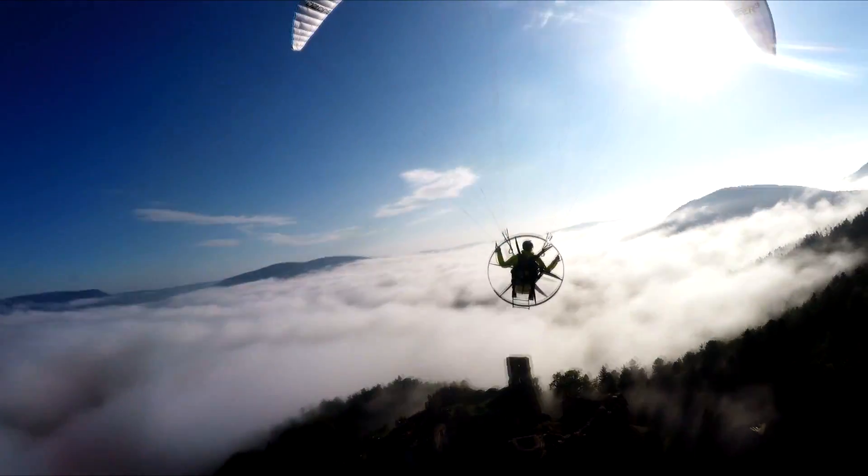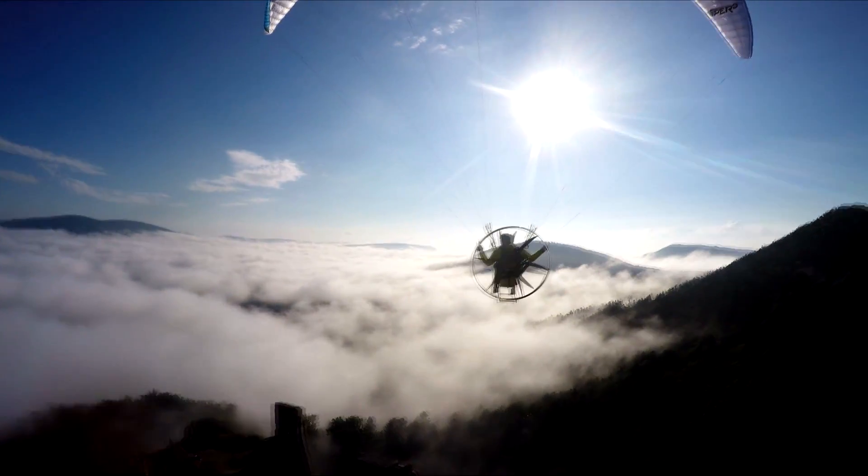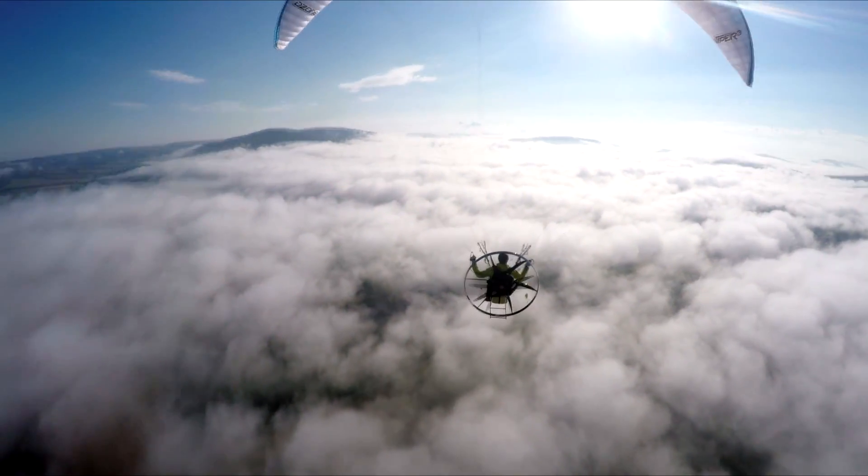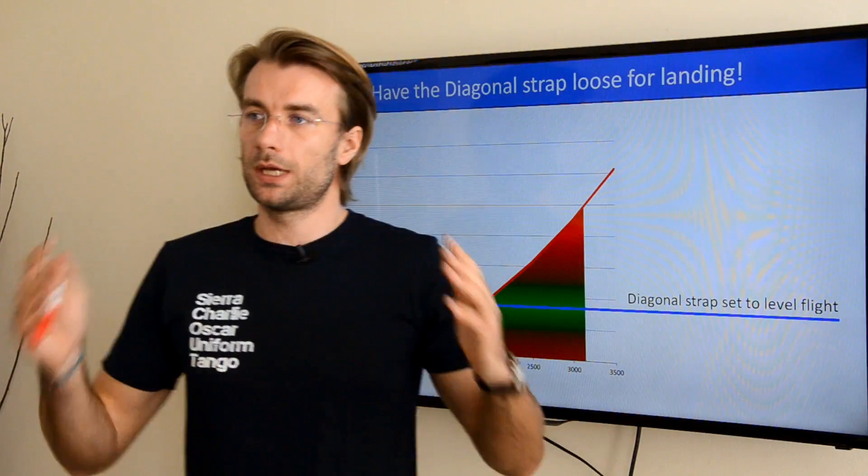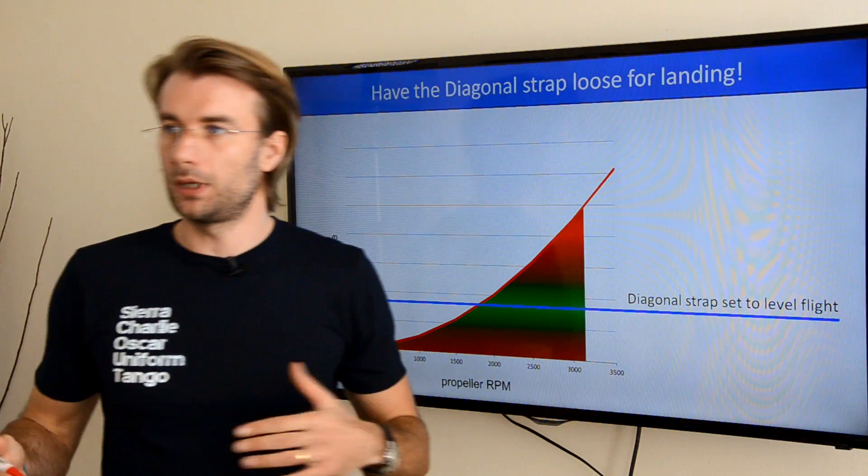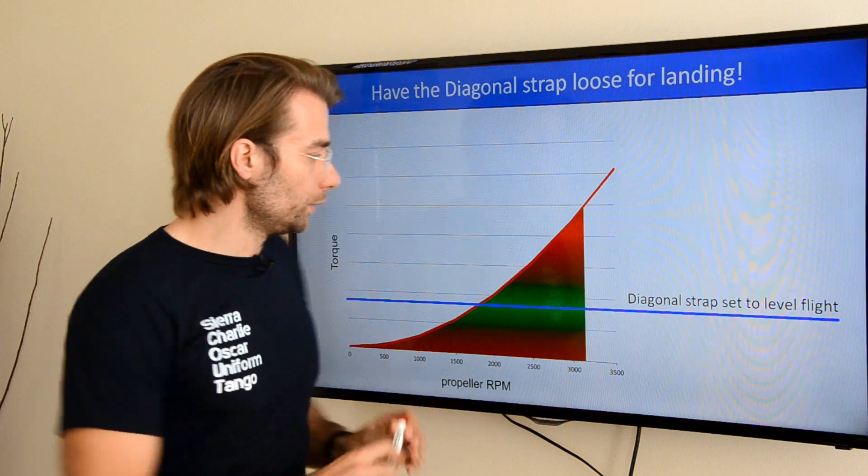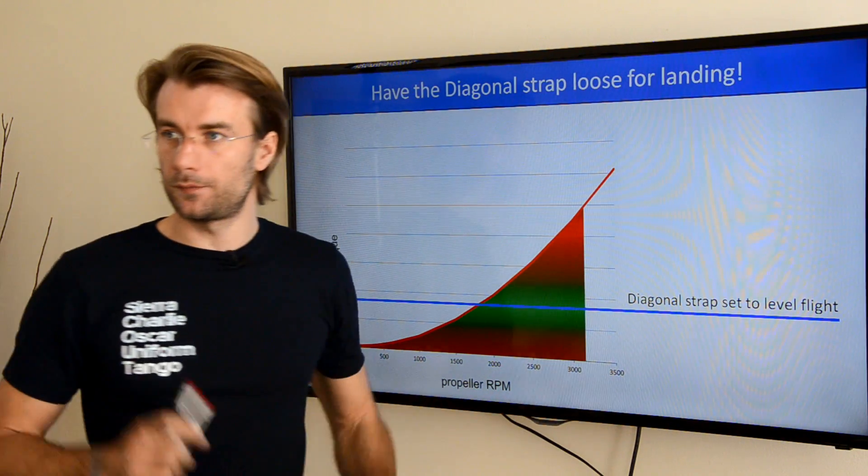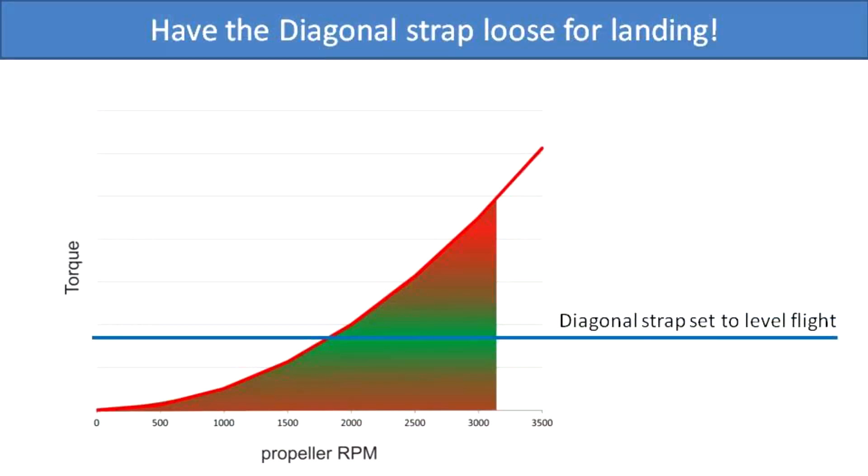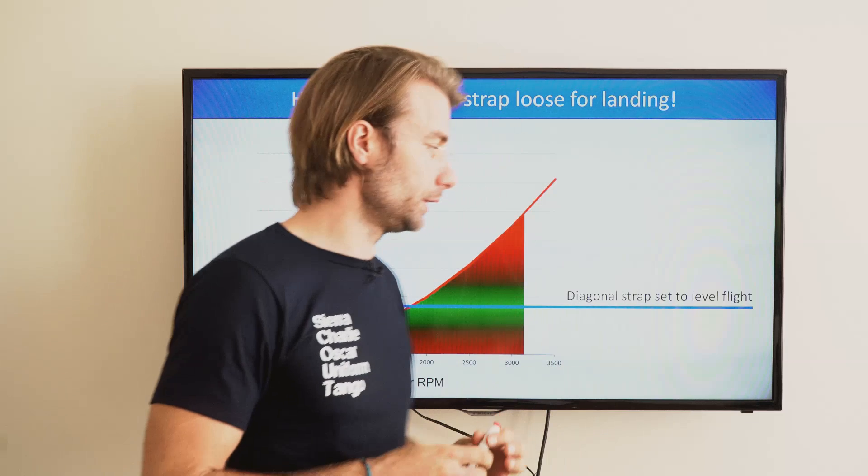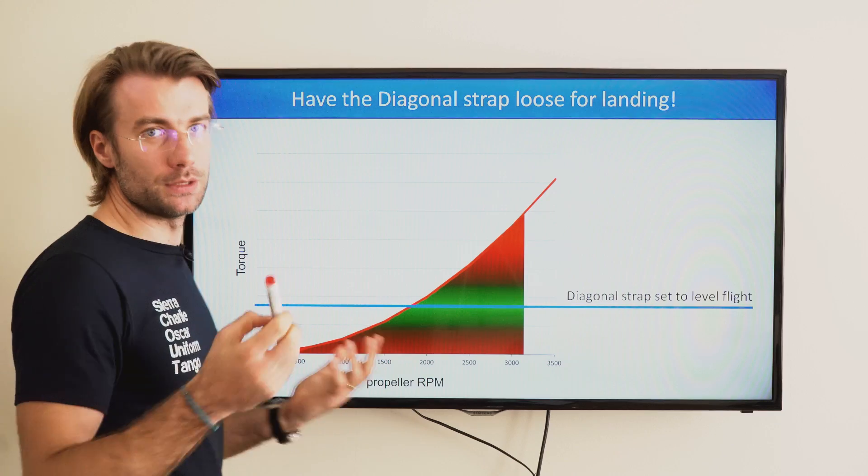Similar situation is with landing and this is the story that happened to me when I started paramotoring with a high suspension unit. Now what happens? I was approaching my tight landing spot with the diagonal strap perfectly set for my level flight. I had a very balanced flight, but I forgot to disconnect the diagonal strap for landing and before landing I did two things. I released the throttle and got out of the harness.